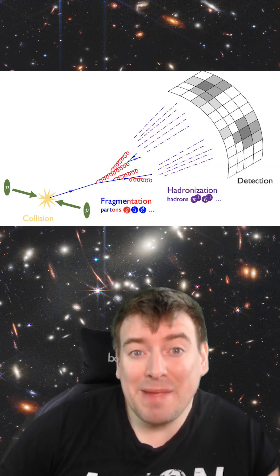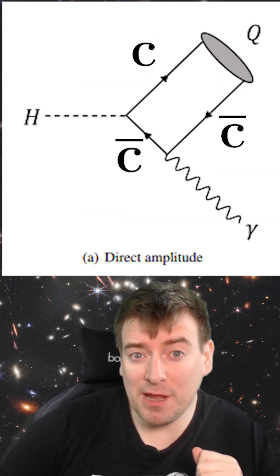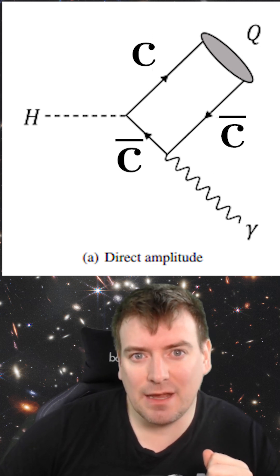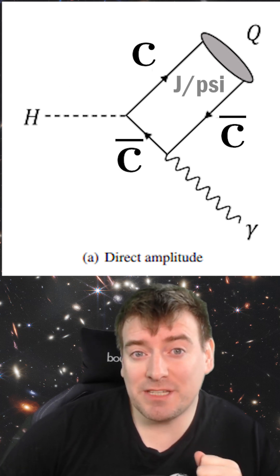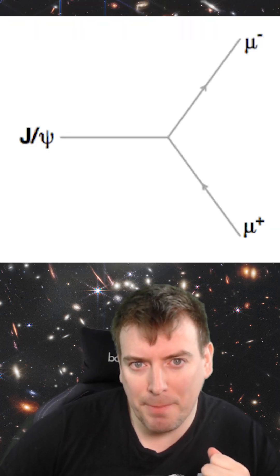And when it does, that pair immediately forms jets of bound states that swarm our detectors. However, very infrequently, the charm pair from a Higgs decay forms a very clean bound state: a J/psi meson with a well-known mass that then decays to a very obvious muon-anti-muon pair.